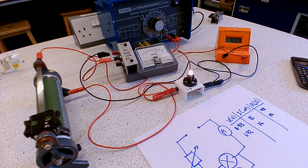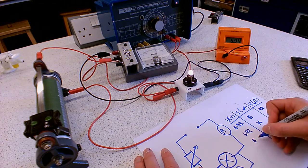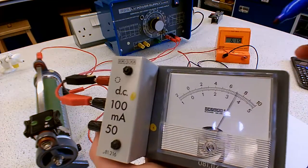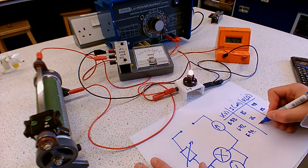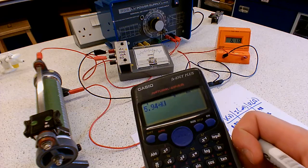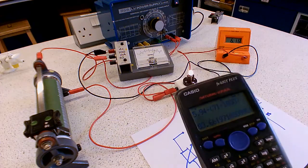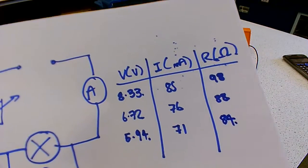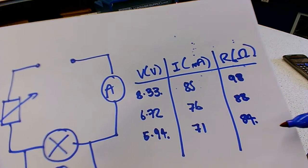Let's crank the rheostat all the way up. The potential difference has settled on 5.94, and the current seems to have settled on 7.1, so that's 71 milliamps. Doing the calculation: 5.94 divided by 71, divided by 1000 — that's gone down to 84 ohms. So it seems like for smaller potential differences, the resistance is getting smaller.